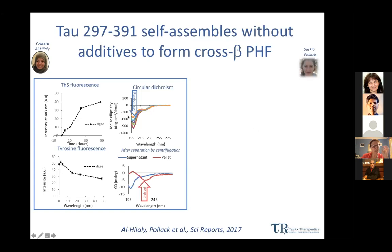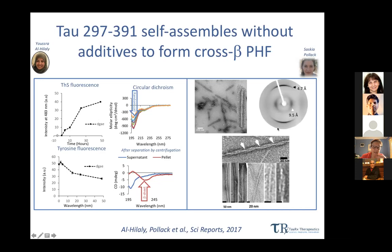If you do CD on the whole sample you get mostly random coil, which reduces over time. But what Yusra did was spin the sample, separating filaments in the pellet from the supernatant, and she finds a beta sheet signal coming from the filaments. This is cross-beta: you can see the 4.7 Å reflection and a reflection on the equator at 9.5 Å. We get really nice-looking structures that resemble paired helical filaments.